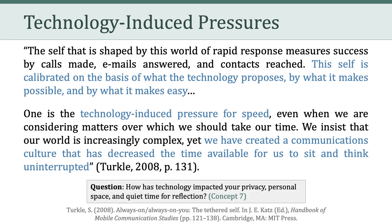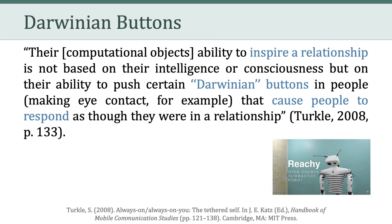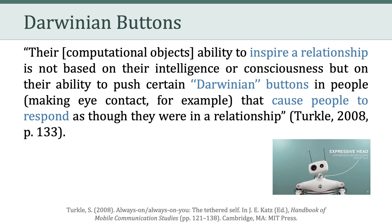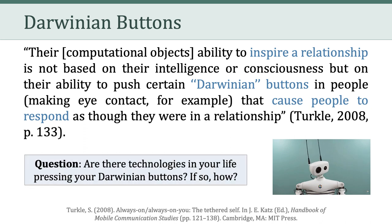How has technology impacted your privacy, personal space, and quiet time for reflection? That question is directly tied to the nature of technology concept number 7. Turkle also talks about Darwinian buttons. She argues that computational objects — computers and communication devices — have an ability to push certain Darwinian buttons in people that cause people to respond as if they were in a relationship. I'd ask you to step back and reflect: are there technologies in your life pressing your Darwinian buttons?